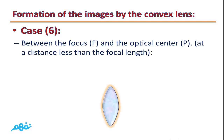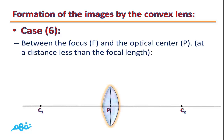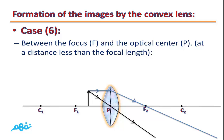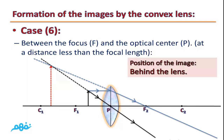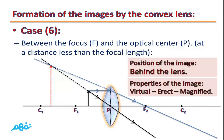The final case: the object is located between the focus and the optical center, at a distance less than the focal length. The first light ray is parallel to the principal axis and refracts passing through the focus. The second light ray passes through the optical center. There is an intersection between the extensions of the two refracted light rays, forming the image behind the lens. The image is virtual, erect, and magnified.